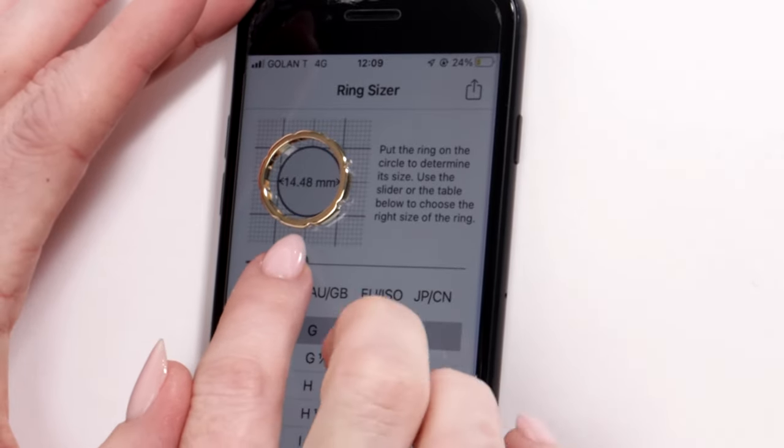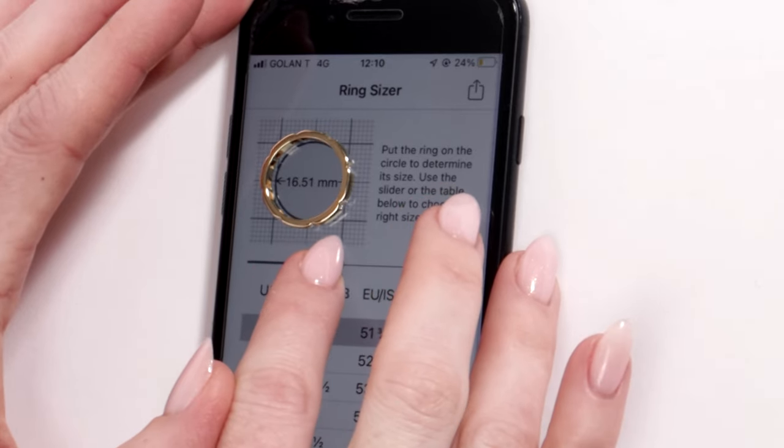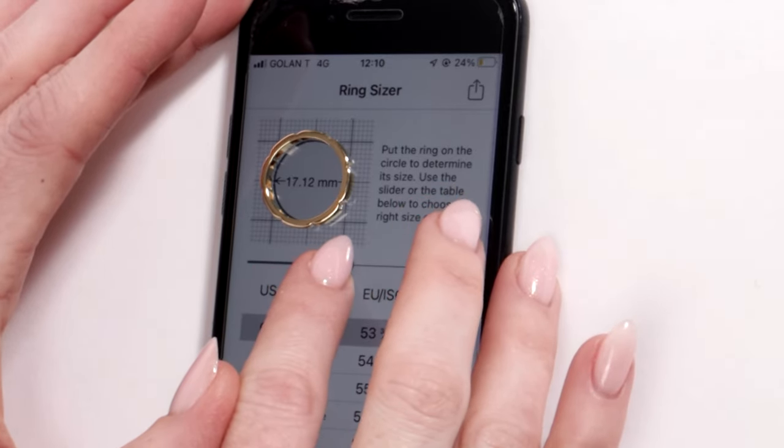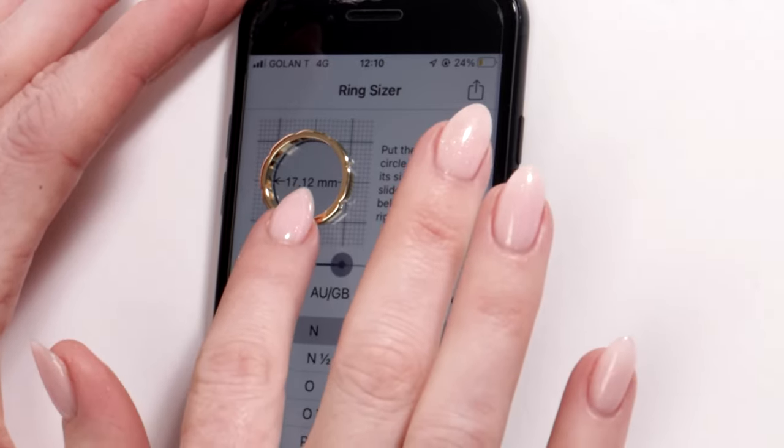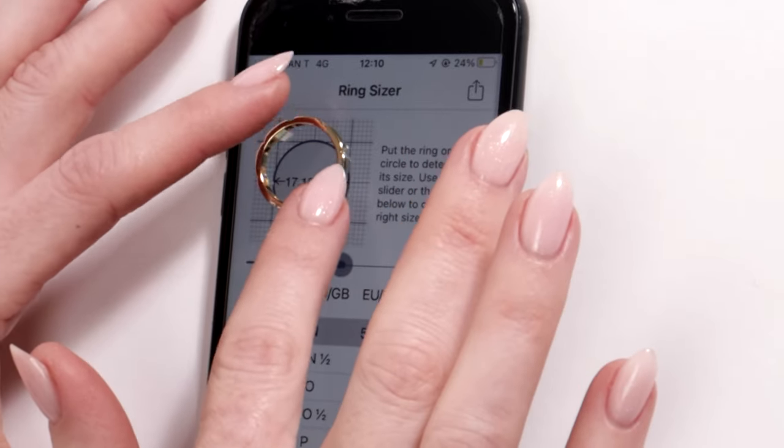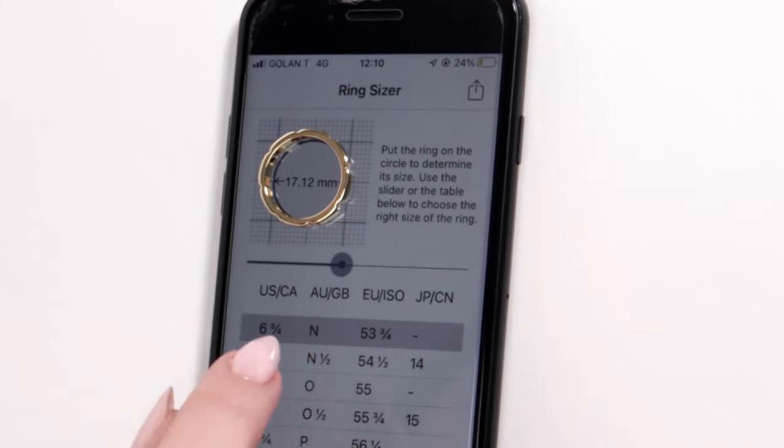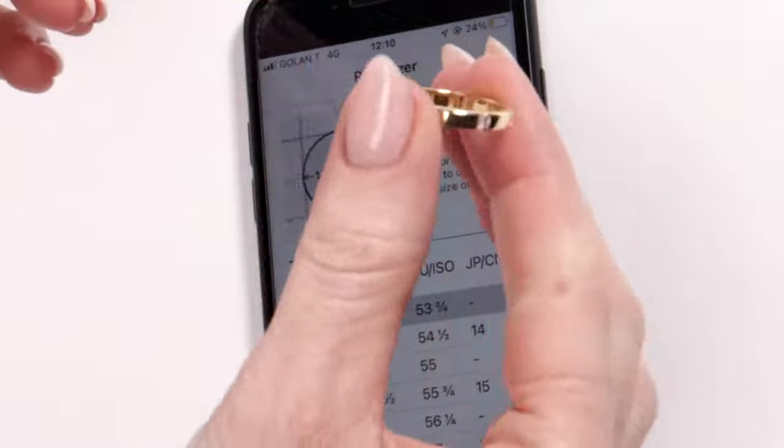We're going to adjust the circle to match up with the ring. So I'm just going to make it larger until I feel like it hits the walls of the ring. Here we go. I think that looks great. Here we have a 53 and three quarters which is a six and three quarters US. And there you go, you have your ring size using a ring that you already have.